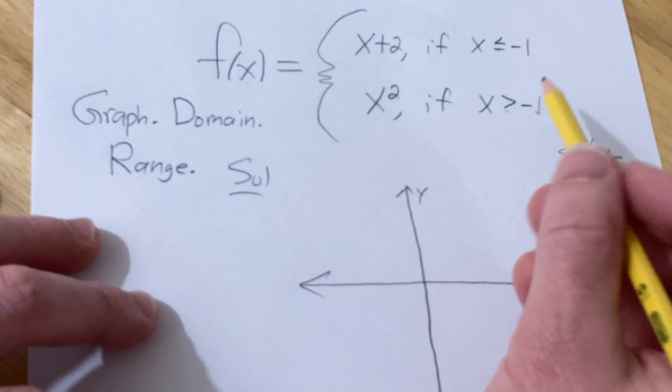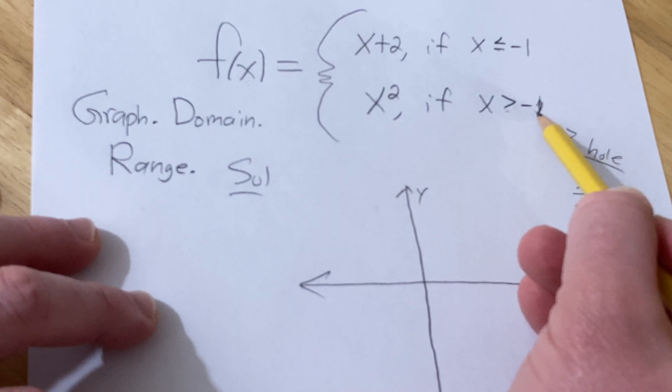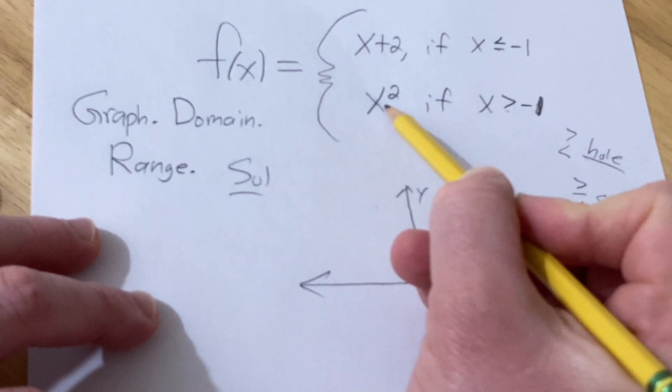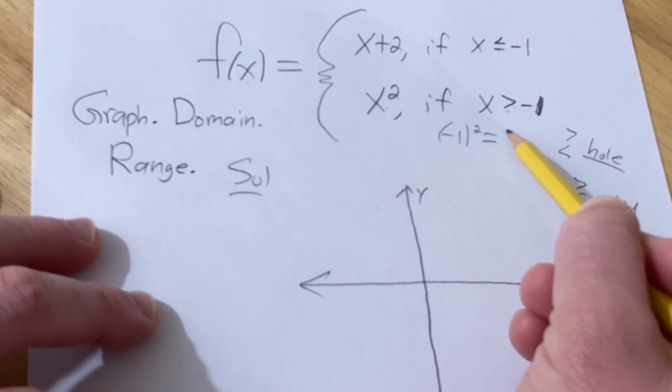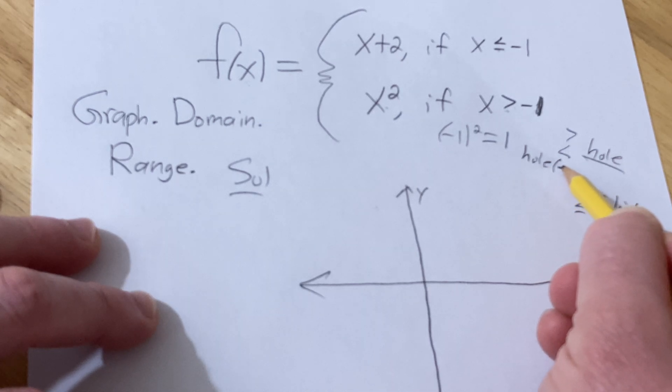So we're breaking the rules to find the hole, this is just a trick that always works. So I'm going to put negative 1 here, that gives us 1. So we're going to have a hole at negative 1 comma 1, that's where our hole is going to be.